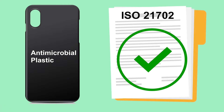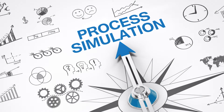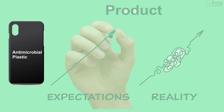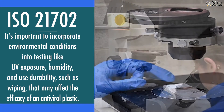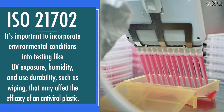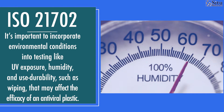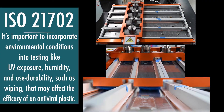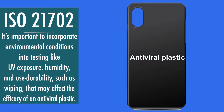Antimicrobial plastics may meet the requirements of ISO 21702. However, when conditioned in simulated environments, treated plastics may not continue to work as intended. This is why it's important to incorporate environmental conditions into testing, like UV exposure, humidity, and use durability such as wiping that may affect the efficacy of an antiviral plastic.